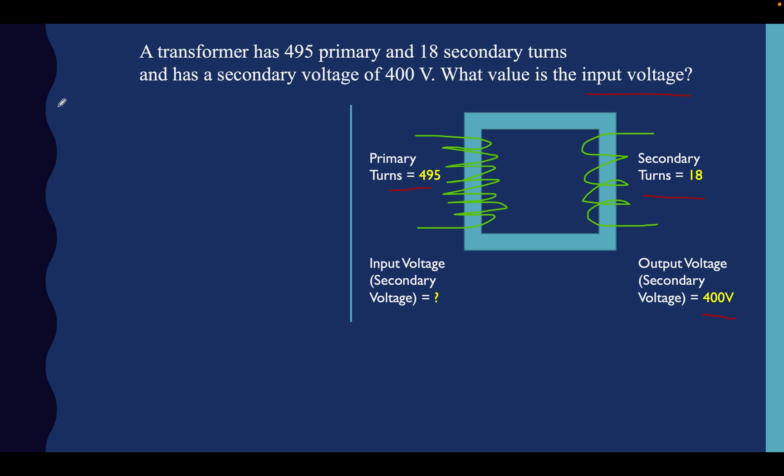This is the formula you're going to want to use for this. Input voltage is equal to the output voltage multiplied by the turns on the primary side divided by the turns on the secondary side. So we're going to divide the turns on the primary by the turns on the secondary, which is that number and that number, and we're going to multiply it by the output voltage.